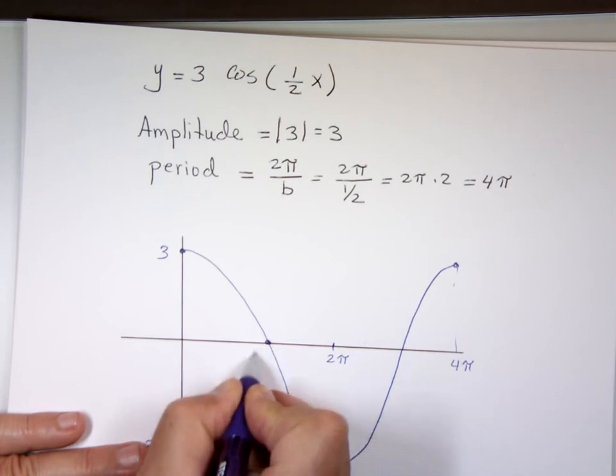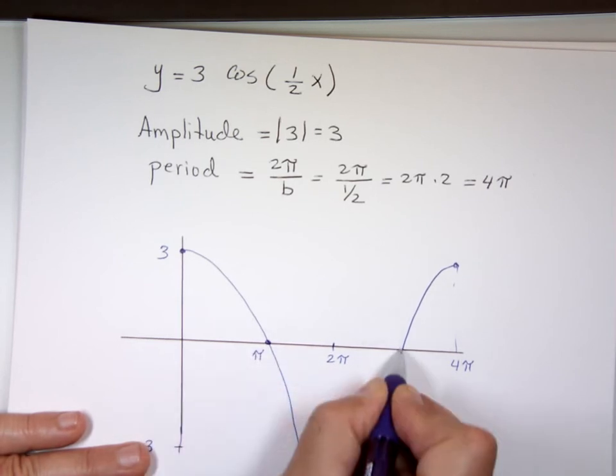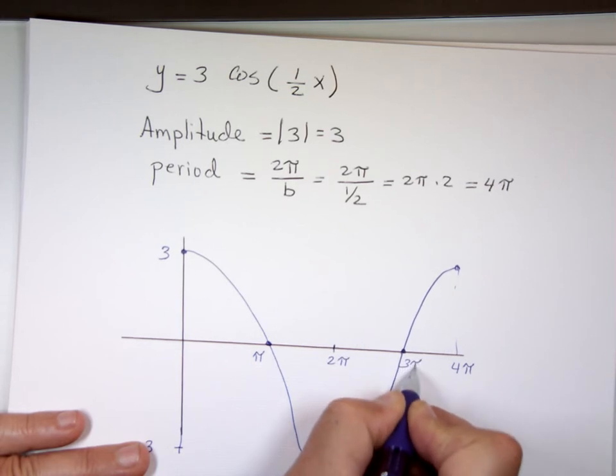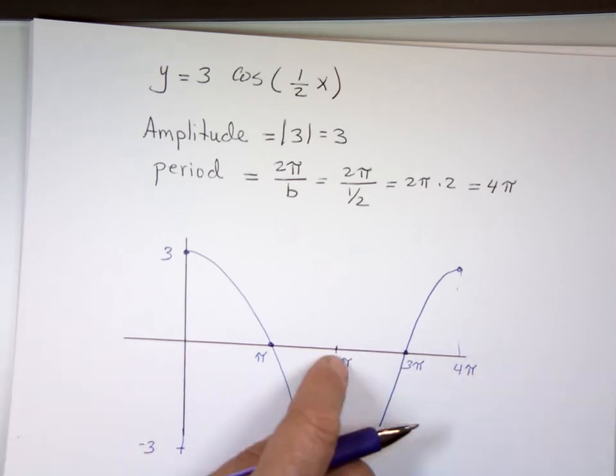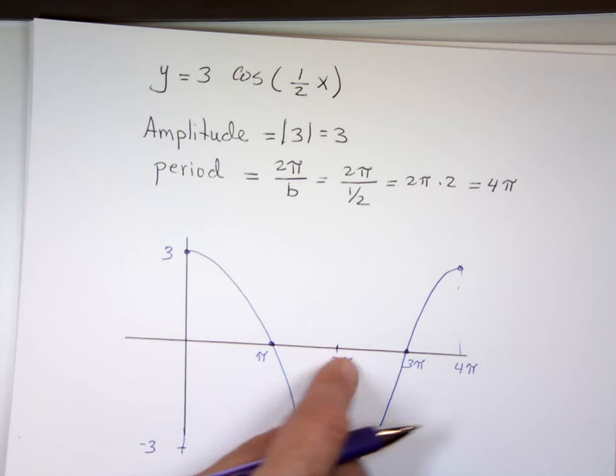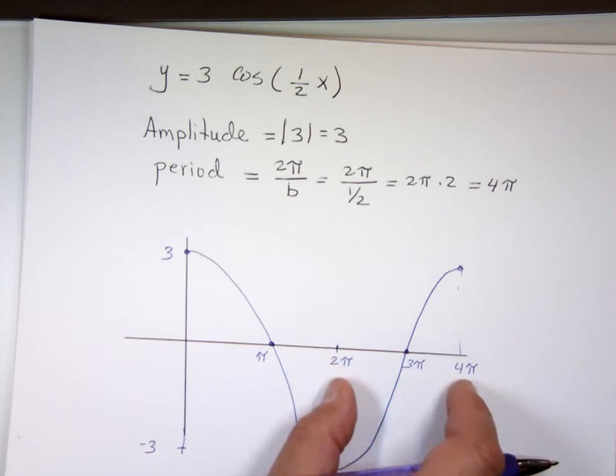That means this one here is 2 pi. This one, pi. This one, 3 pi. This is halfway. This is halfway here. This one halfway between 2 pi and 4 pi.